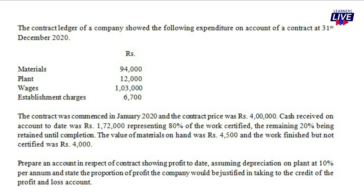For this class, there are a few expenditures: materials, plant, wages, and establishment charges. The contract price is $400,000. The cash received on account to date is $172,000, representing 80% of the work certified.